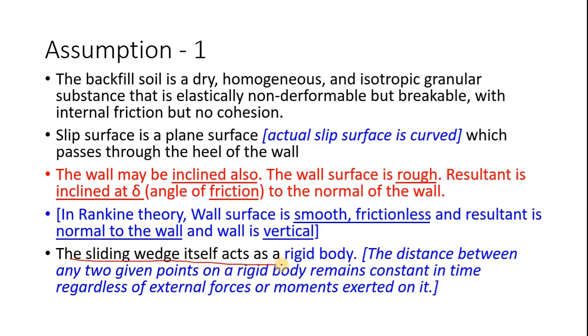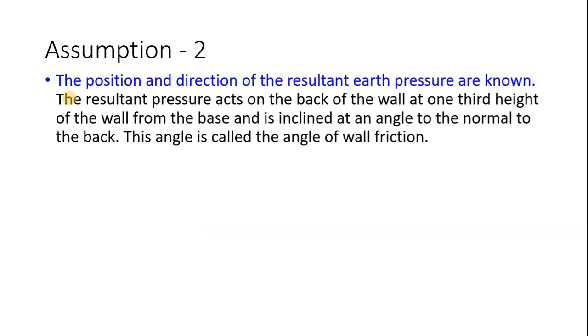Now the sliding wedge itself acts as a rigid body. Rigid body means if this is a rigid body and we consider any two points within it, the distance between these two points remains the same at any given time t. That is, it is non-deformable.